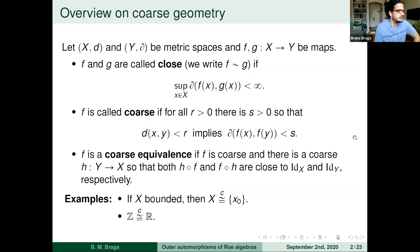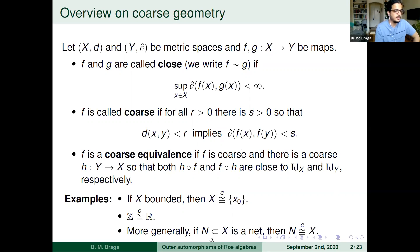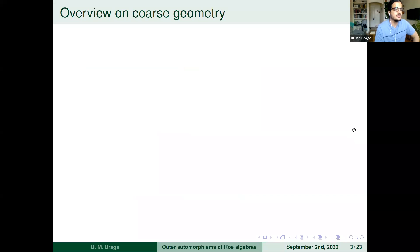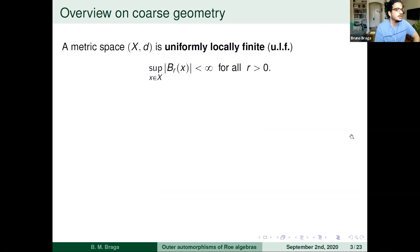We introduce the notion of coarse equivalence: a map must be coarse and you need a coarse inverse, which is also coarse, and when you compose them you get something close in the sense above. Examples: every bounded space is coarsely equivalent to any other bounded space. Z is coarsely equivalent to the real line — you take the identity and to go back you take the integer part. More generally, any net of a metric space — a set that is epsilon-dense and delta-separated — gives a coarse equivalence.